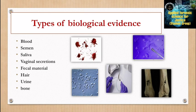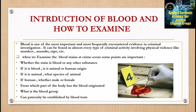The types of biological evidence are: first, blood; second, semen; third, saliva; fourth, vaginal secretion; fifth, fecal material; sixth, hair; seventh, urine; and eighth, bones. Blood is one of the most important and most frequently encountered evidence in a criminal investigation.